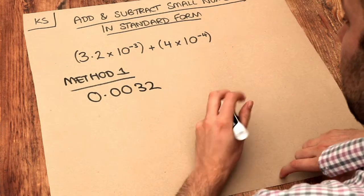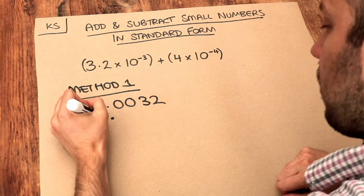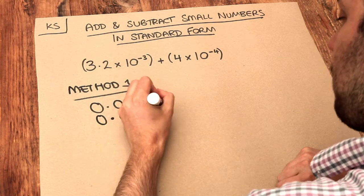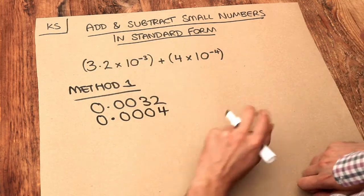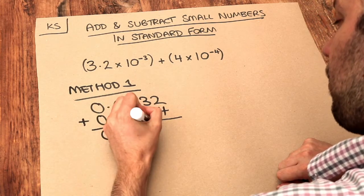And then we've got this other number, four times ten to the minus four. So put the point here, we're going to have four zeros, so one, two, three, four. Put the four here. So these two numbers as normal numbers, add them together and that's going to give you 0.0036.